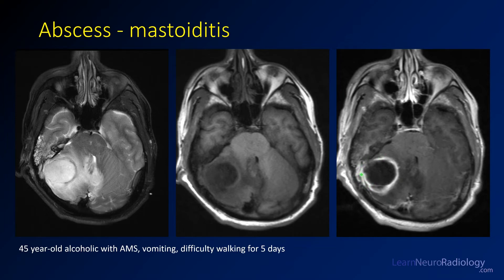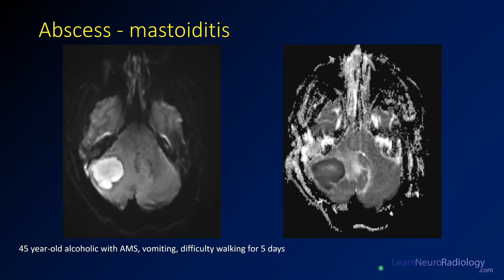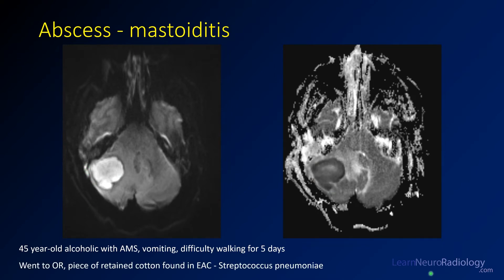You see peripheral enhancement in the adjacent vein but also a filling defect, indicating thrombosis of that vessel. On DWI the abscess is extremely bright with a dark rim, and on ADC it is confirmed to be truly reduced diffusion. The bright contents in the vein again correspond to thrombosis. This patient went to the OR and had a piece of retained cotton in the external auditory canal; culture grew Strep pneumoniae.